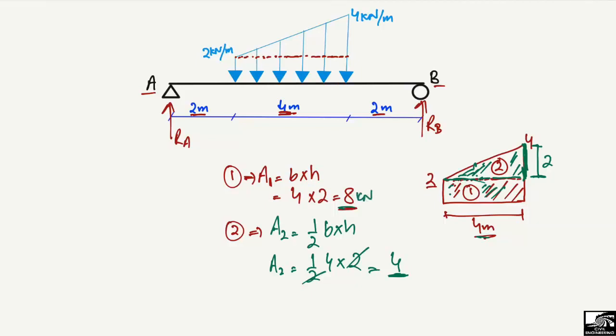So we have two loads: from the rectangle it is 8 kN, and from the triangle it is 4 kN. We have successfully changed the whole trapezoidal load into two loads — one rectangular and one triangular — and now we can go and solve our problem.